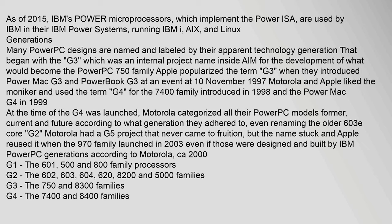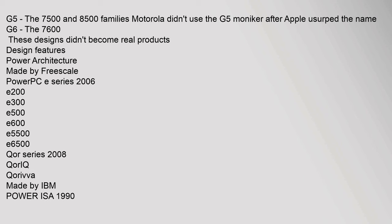At the time the G4 was launched, Motorola categorized all their PowerPC models — former, current, and future — according to what generation they adhered to, even renaming the older 603 E core as G2. Motorola had a G5 project that never came to fruition, but the name stuck and Apple reused it when the 970 family launched in 2003, even though those were designed and built by IBM. PowerPC generations according to Motorola (ca. 2000): G1 — the 601, 500, and 800 family processors; G2 — the 602, 603, 604, 620, 8200, and 5000 families; G3 — the 750 and 8300 families; G4 — the 7400 and 8400 families.